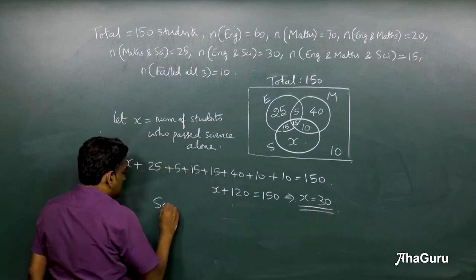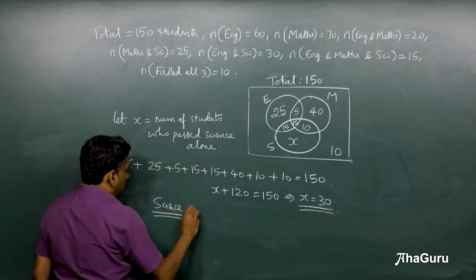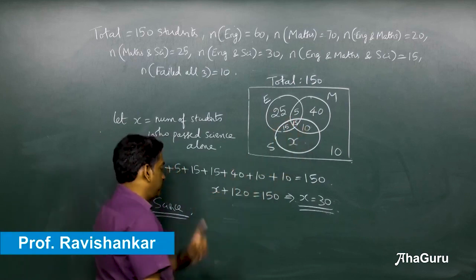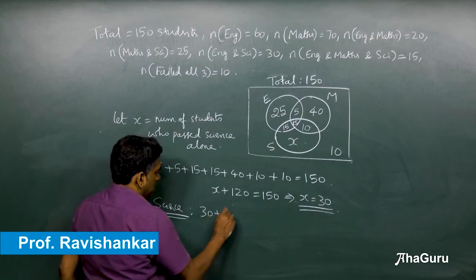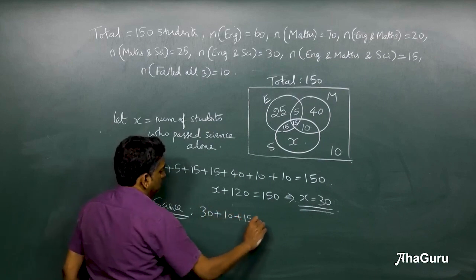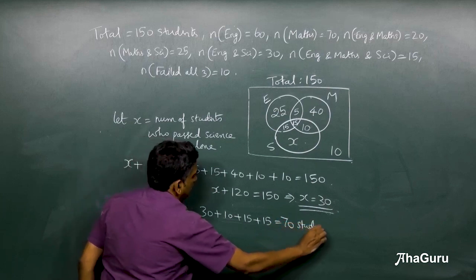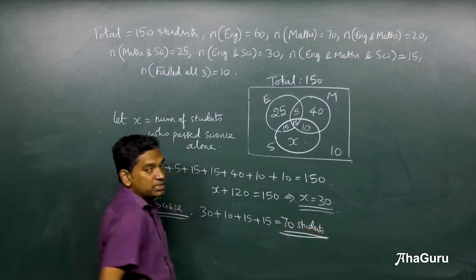Now what we are asked is the total number of students who passed in Science, which is x plus 10 plus 15 plus 15, which is 30 plus 10 plus 15 plus 15, which equals 70 students. That is the answer.